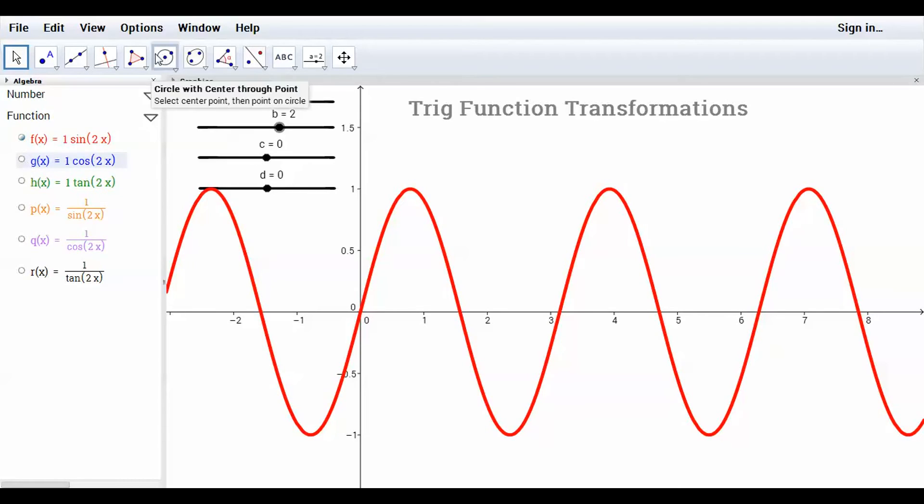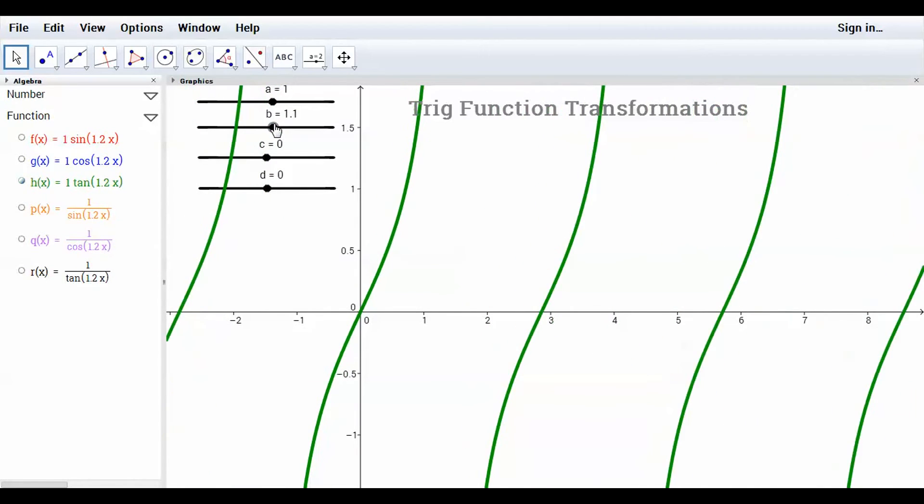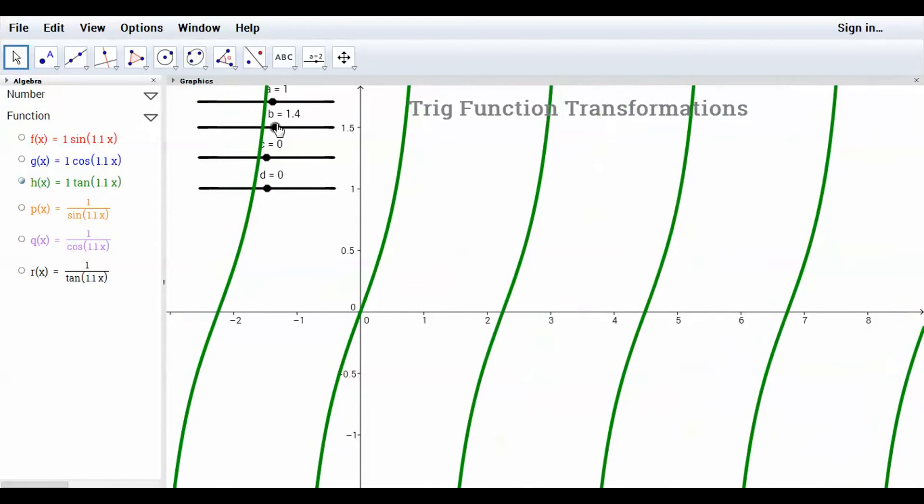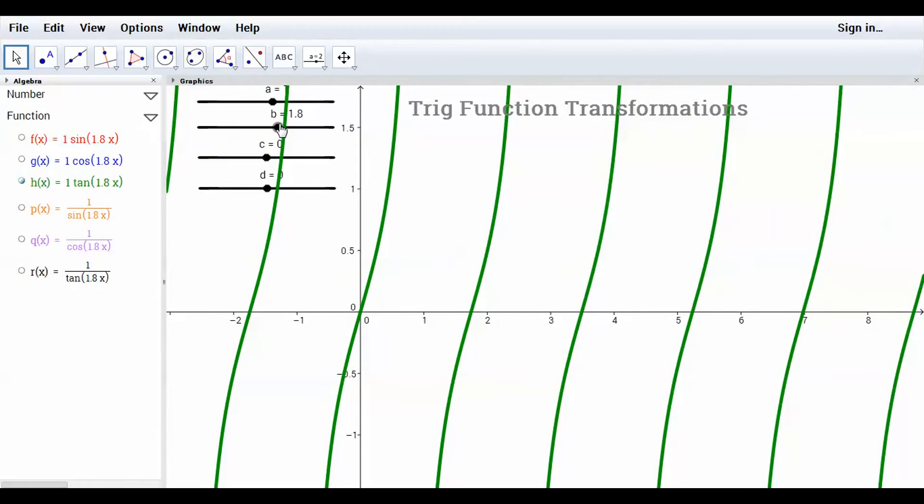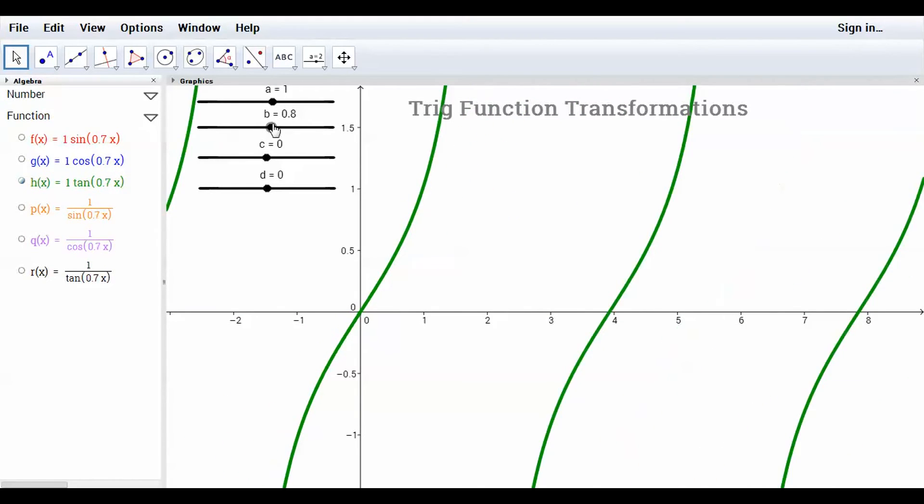And same thing for cosine and tangent. If I change the period on tangent, it's normally pi units. Now it's smaller and smaller. If I change that B value to a fraction, now the graph kind of gets wider. It's changing the period.